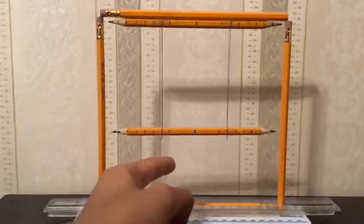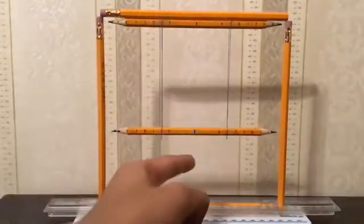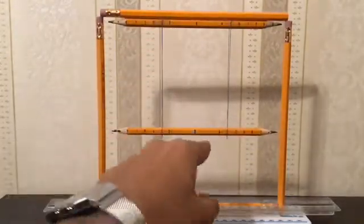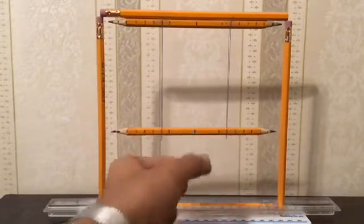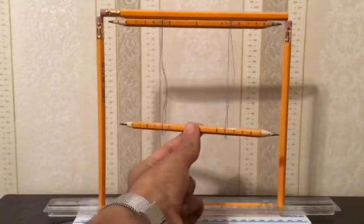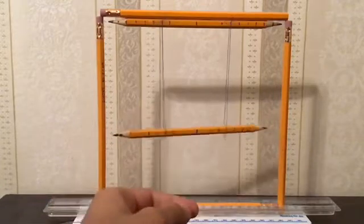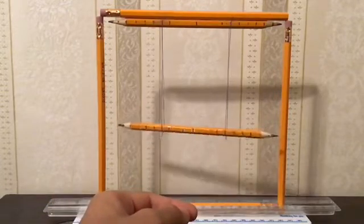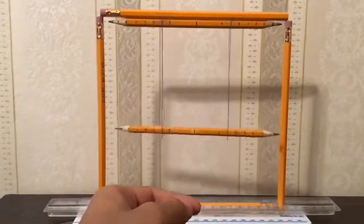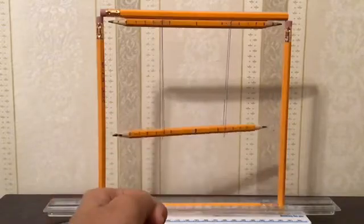Here we have a uniform rod, which is the pencil, connected to two suspension strings that are equal in length and kept equidistant apart from the center. When you rotate the pendulum at any given angle, tension forces in the string cause it to oscillate back and forth until it reaches its equilibrium position. This is known as a restoring torque force.